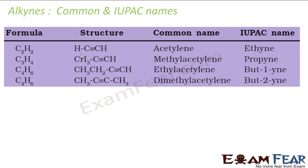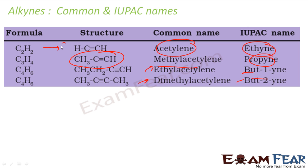Some common IUPAC names: C₂H₂ is called ethyne (IUPAC) and commonly acetylene. C₃ with a triple bond is propyne, commonly called methylacetylene. But-1-yne is called ethylacetylene and but-2-yne is called dimethylacetylene.